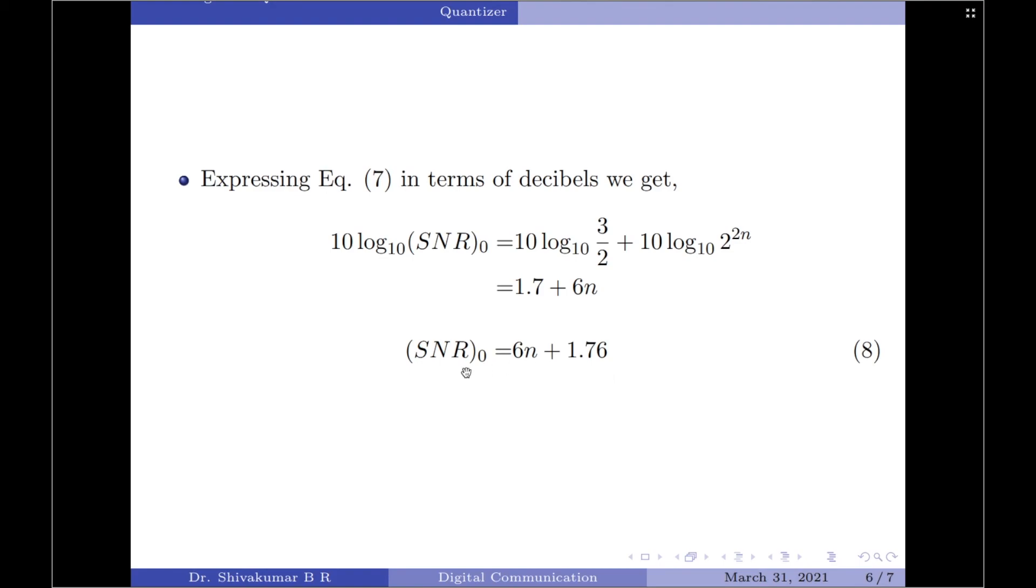From equation 8, we note that each bit of the codeword of the PCM system contributes 6 dB to the signal to noise ratio. This is also commonly called as the 6 dB rule.